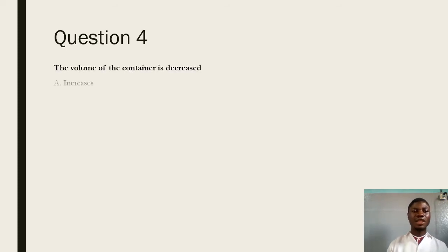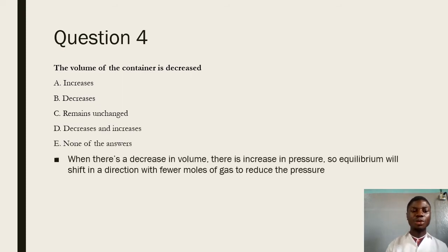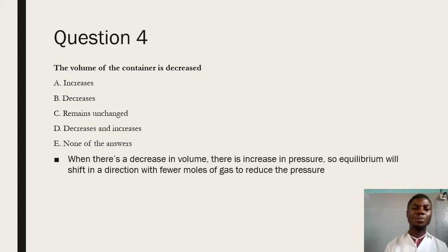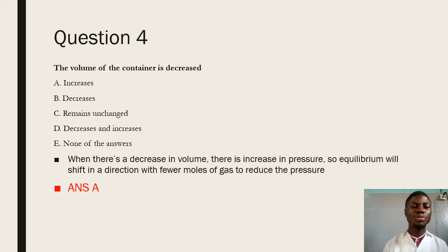Question 4 says: if the volume of the container is decreased. If the volume of the container is decreased, then pressure increases. If there is an increase in pressure, the equilibrium must shift in a direction that tries to decrease the pressure. From our balanced equation, we have 2 moles of gas on the left-hand side and 3 moles of gas on the right-hand side. If the pressure of the system is increased, the equilibrium will shift in a direction that has fewer moles of gas. Therefore, the equilibrium is going to shift to the left, the backward reaction is favored, and the answer is A, as a result of an increase in the equilibrium amount of sulfur trioxide.